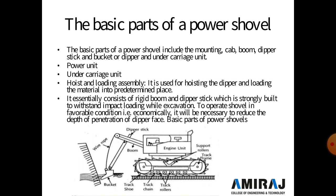The basic parts of the power shovel include the mounting, cab, boom, dipper stick, bucket, and carrier unit. The bucket is used for excavating and also for material loading and unloading. The dipper stick is used to move the bucket in a downward direction — if the excavated area is below the normal level of the land, the dipper stick moves downward and we easily cut and excavate the soil to fill up the bucket.